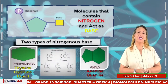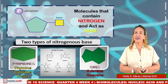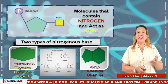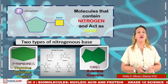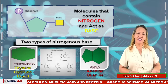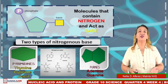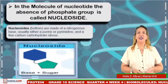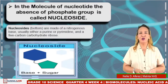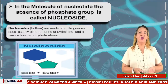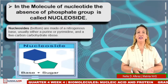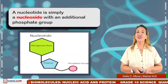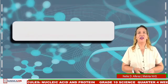The nitrogenous base is essentially a molecule that contains nitrogen in varying amounts and acts as a base. There are two types of nitrogenous bases: the single ring, called pyrimidine, and the double ring, called purine. Pyrimidines include thymine, cytosine, and uracil. Purines include adenine and guanine. Note that due to the presence of the double ring, purine is larger than pyrimidine. In a nucleotide, the absence of a phosphate group is called a nucleoside — a nucleoside with an additional phosphate group forms a nucleotide.